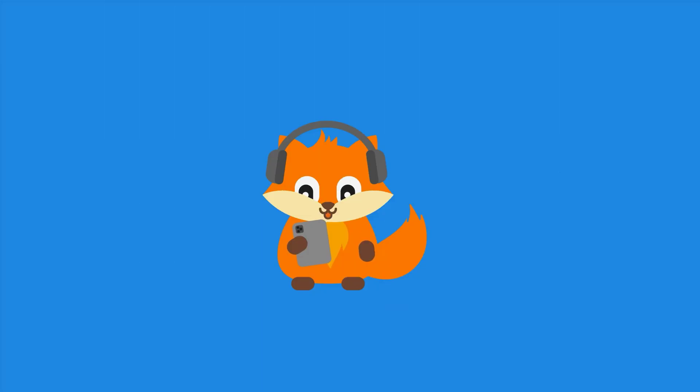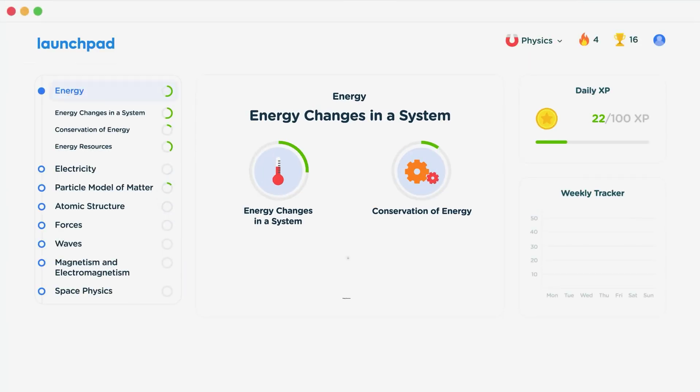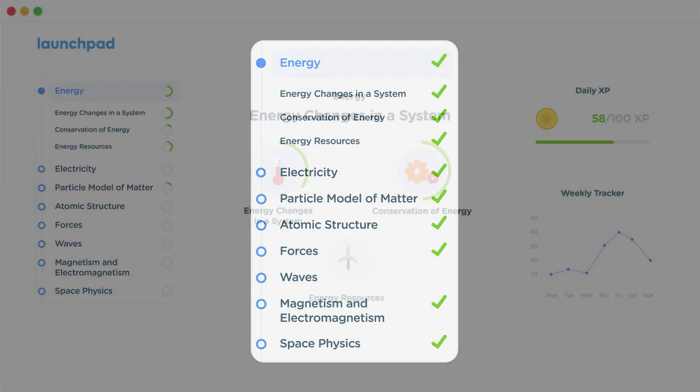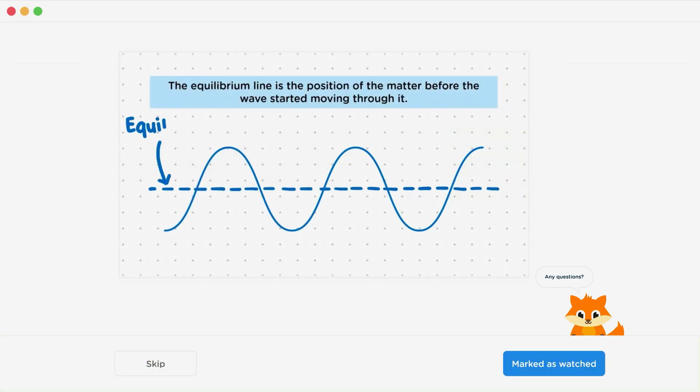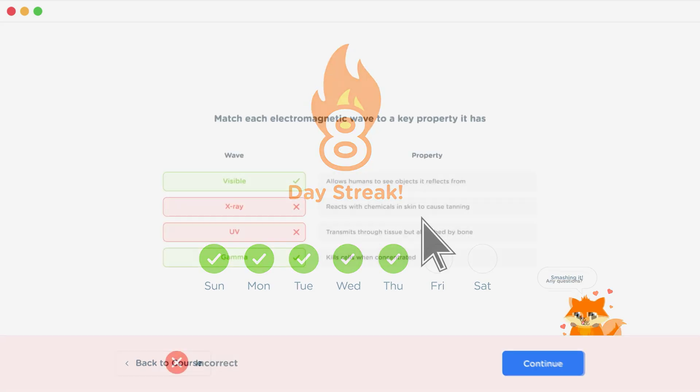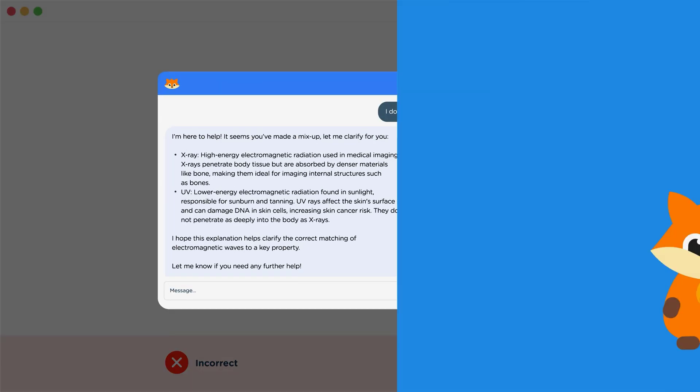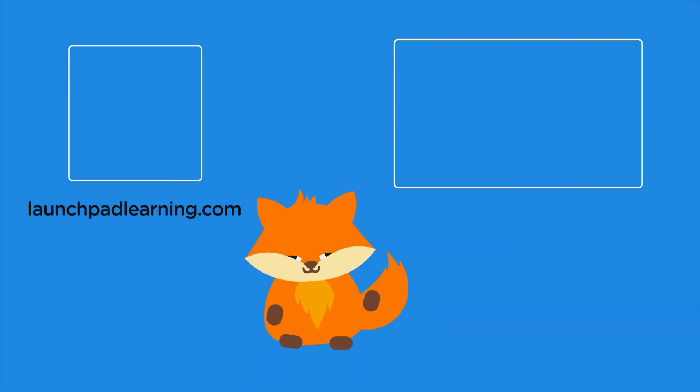Thanks for watching. If you want to take your GCSE revision to the next level, head over to launchpadlearning.com and check out our smart learning platform that's been designed to get you top results in your exams. We cover your whole specification and make revision fun with interactive quizzes, easy to follow videos and more. You'll be kept motivated by your own AI tutor who's here to support you every step of the way. To check it out for yourself, click here. Or click here to keep watching a selection of the videos from our full GCSE Physics course. See you there!